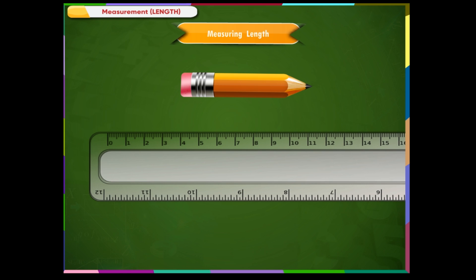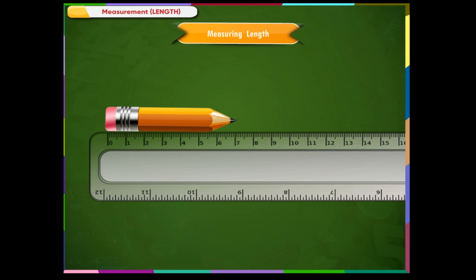Step 1: Place the pencil alongside the scale as shown. Step 2: Place the zero mark of the ruler on one end of the pencil. Step 3: Now read the mark where the other end of the pencil ends. Step 4: Here it reads 7 cm.